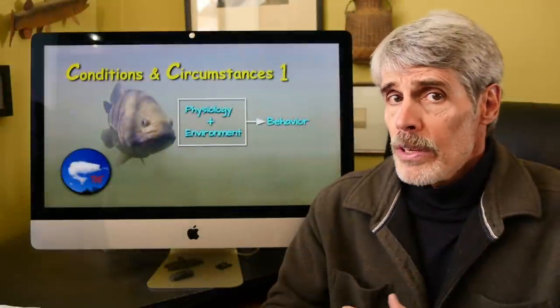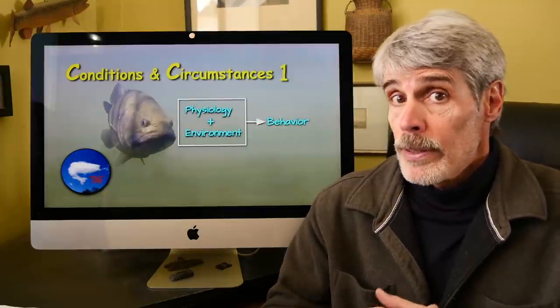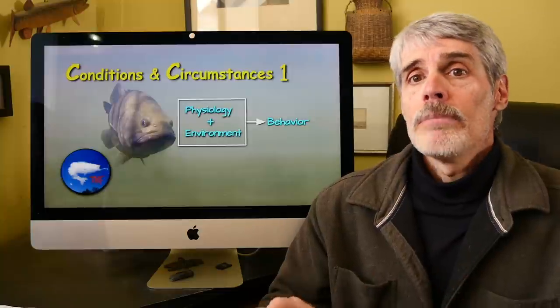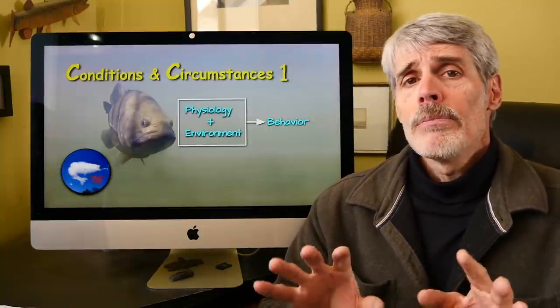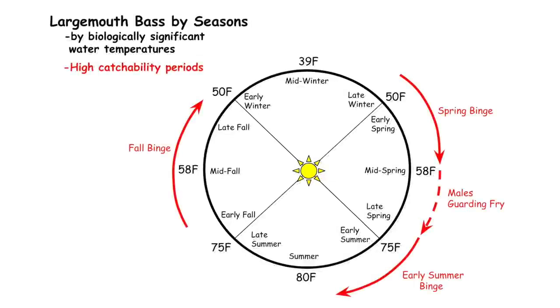While fish species can acclimate to a range of temperatures, there are some temperatures, fairly specific numbers actually, that weigh in more heavily on them than others. And these become important thresholds that help us define the seasons from that particular species' perspective. These numbers can help us anglers make some sense of certain seasonal presentation puzzles, namely the spring and fall feeding binges, the midsummer doldrums or dog days as they're called, and the winter crash.